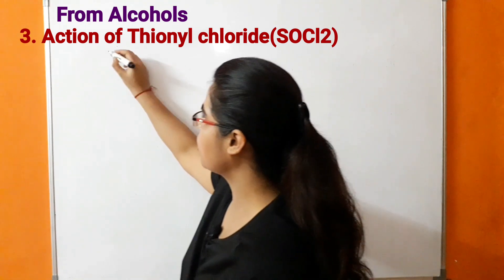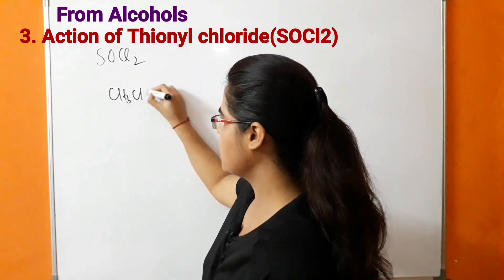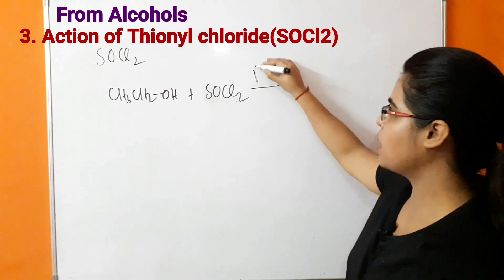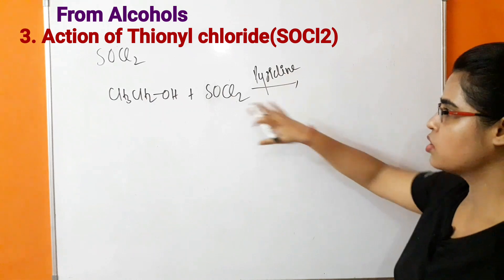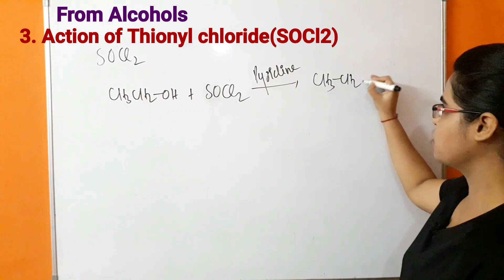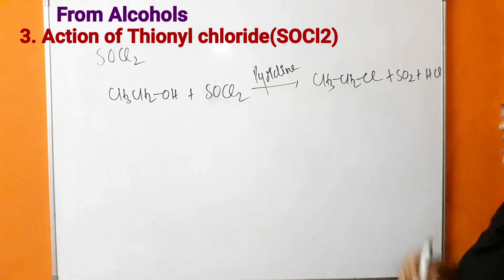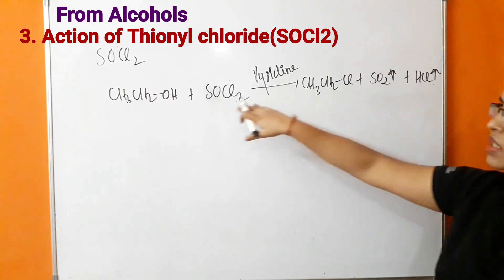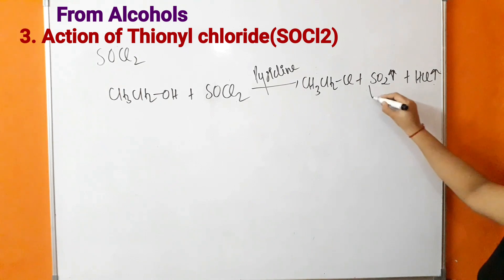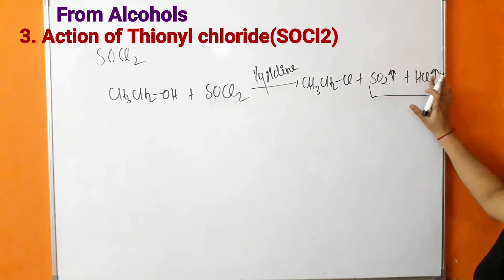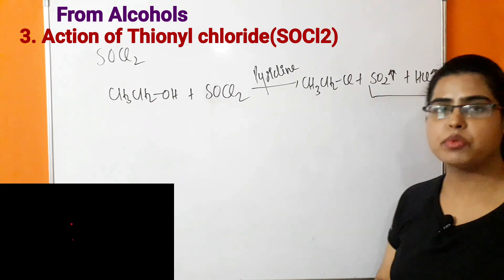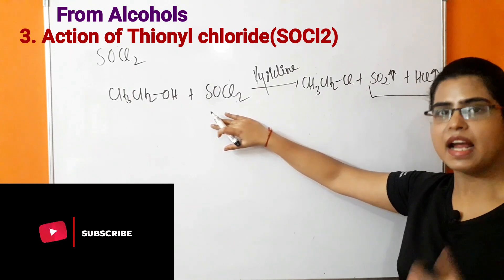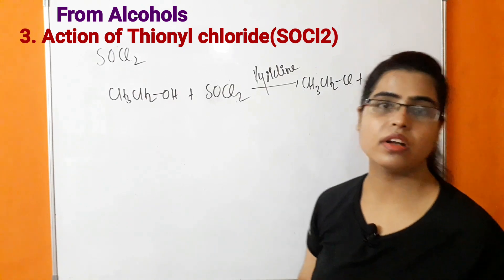The next preparation method is action of thionyl chloride (SOCl₂) on alcohol. Ethanol reacts with SOCl₂ in the presence of pyridine (acting as base) to form chloroethane, SO₂, and HCl. This method is more preferred than phosphorus pentahalides or trihalides because the byproducts SO₂ and HCl are gases, which are easily removed from the product side, giving pure chloroethane. This makes the reaction more economical and preferred.